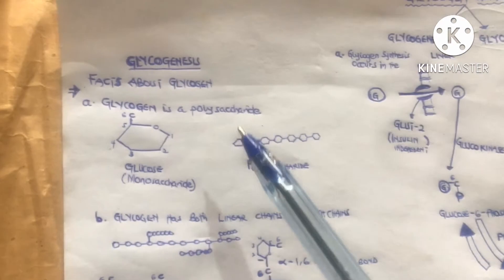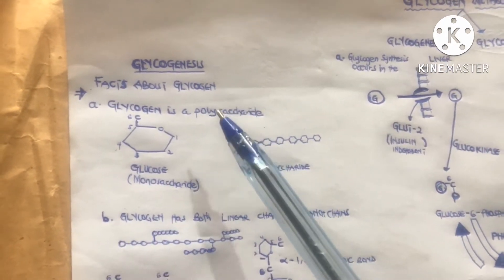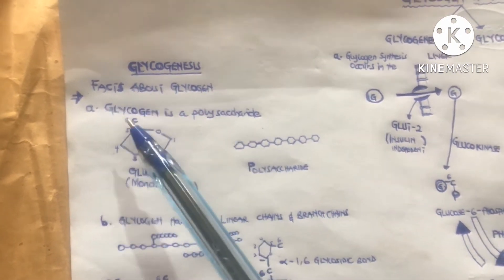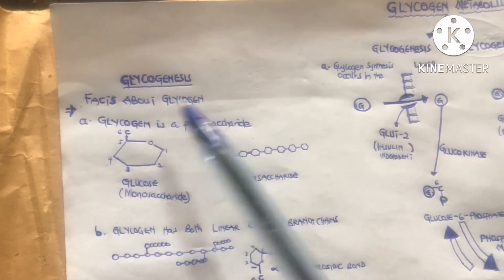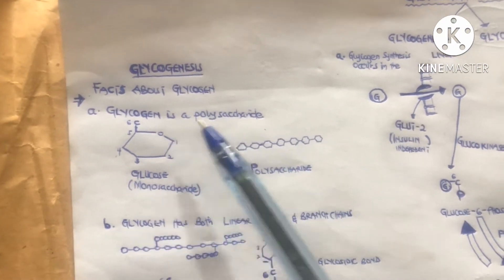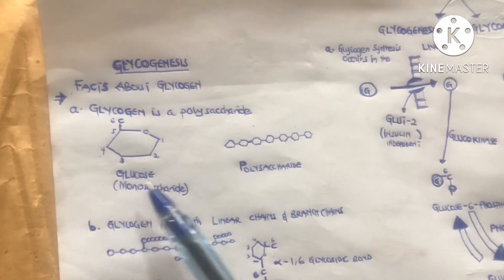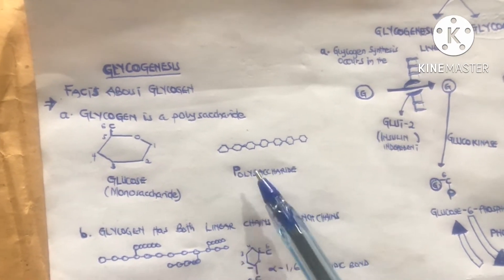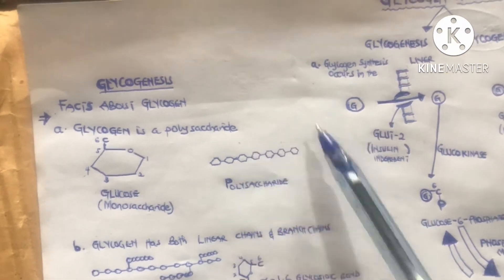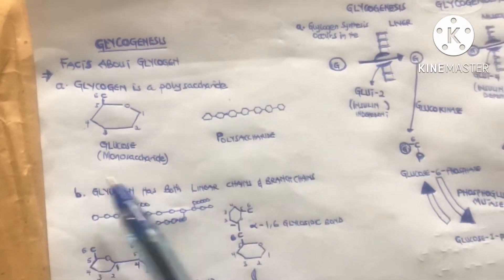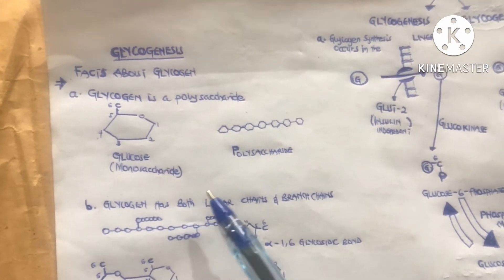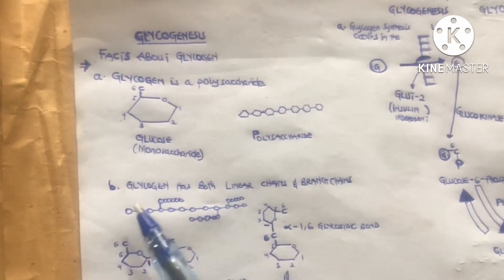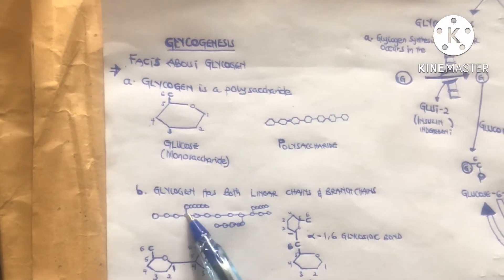Before we talk about glycogenesis, let's look at some facts about glycogen. First, glycogen is a polysaccharide. Glucose is a monosaccharide, and when you put many glucose units together, you get glycogen, which is a polysaccharide. Second, glycogen has both linear chains and branchings.